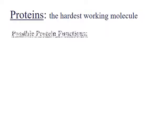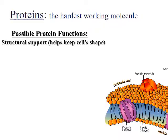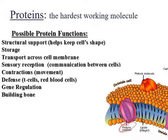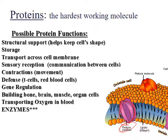Proteins have lots of different functions — they're known as the hardest working molecule in the cell. Possible functions include structural support, storage, transporting stuff across the membrane via protein channels, sensory reception, and communication between cells. Muscle contractions are based on proteins doing the job. Your immune system — white blood cells, also known as T cells — are based on proteins recognizing if a virus is present. Gene regulation tells your DNA which genes to express. The building of muscle cells, organ cells, and brain cells is done by proteins. Transporting oxygen in the blood via hemoglobin — that's a protein — is one of the most important functions.